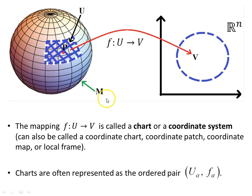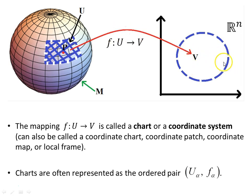The mapping F that takes the open set U to the open set V in Euclidean space — from the manifold to Euclidean space — is called a chart or a coordinate system. It can also be called a coordinate chart, a coordinate patch, a coordinate map, or a local frame. Charts are often represented as the ordered pair (U_alpha, F_alpha). Here is the manifold, here is the open set U, and there is a mapping that takes points from U to Euclidean space to the set V. We need the open set U around some point covering as much of the manifold as possible, and that is mapped to an open set of the same dimension in Euclidean space.